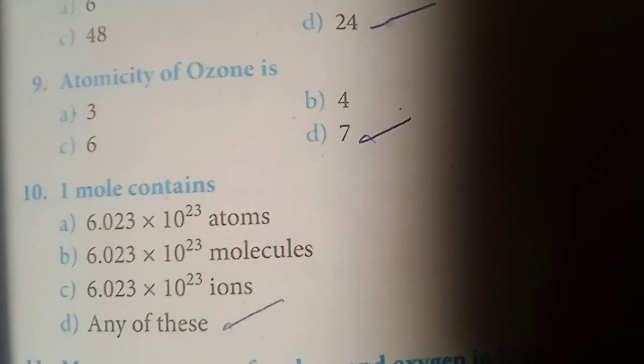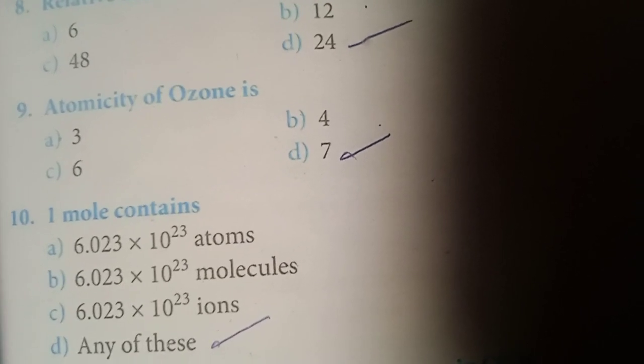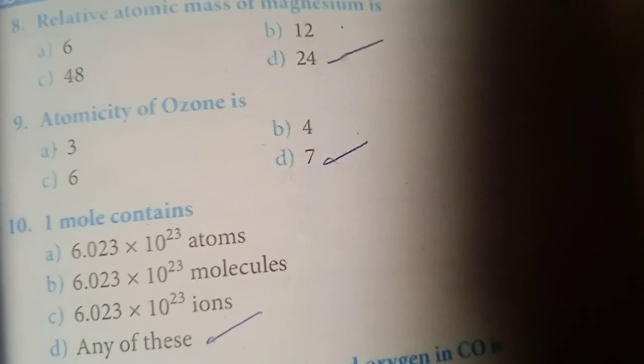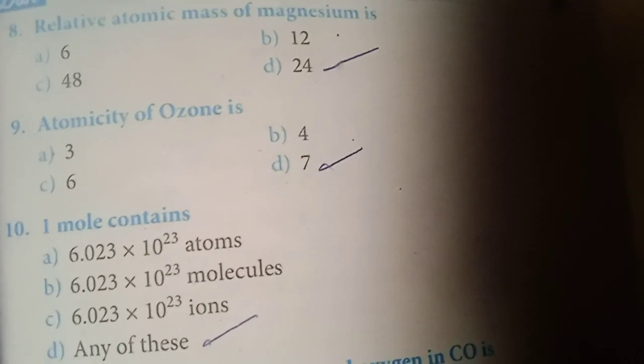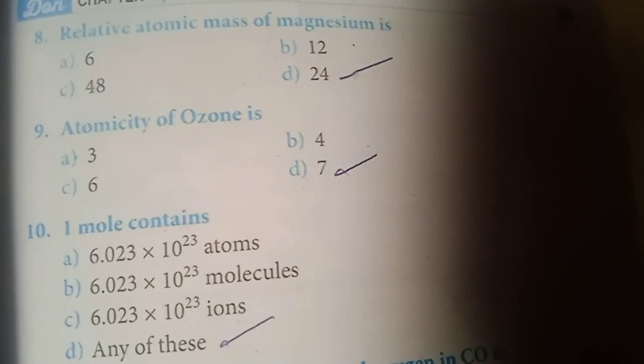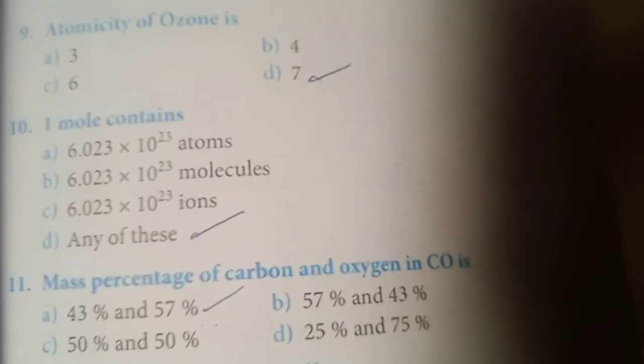One mole contains: A, 6.023 times 10 to the power 23 atoms; B, 6.023 times 10 to the power 23 molecules; C, 6.023 times 10 to the power 23 ions. Any of these can be one mole, so answer is option D, any of these.